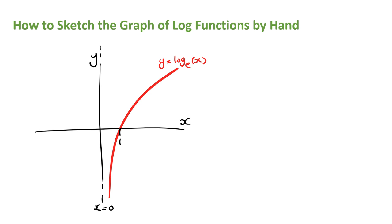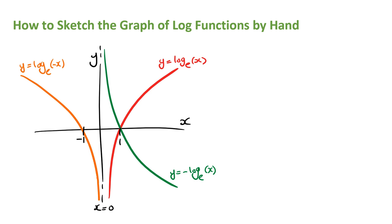If we write a negative in front of the log function, then the graph is going to look something like this. The curve lies to the right of the asymptote and approaches negative infinity as the values of x increase, and approaches the asymptote as the values of x decrease. If the negative is written in front of the x and not in front of the log function, then the graph looks something like this. The curve is now to the left of the asymptote, and as the values of x decrease, the curve will approach infinity, and as the values of x increase, it approaches the asymptote.